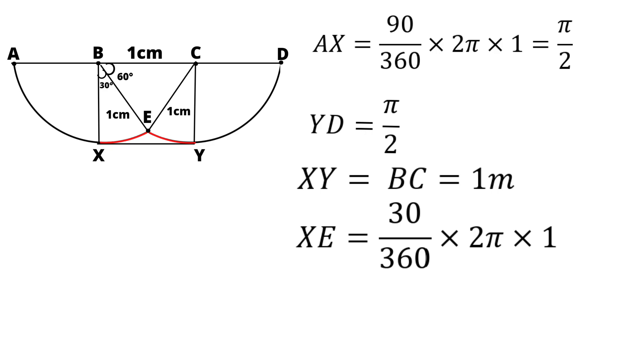So, we have 30 and 360 get cancelled. We have 1 by 12 times 2π times 1. Then, 2 and that 12 get cancelled. At last, we have π by 6 which is approximately equal to 0.523.